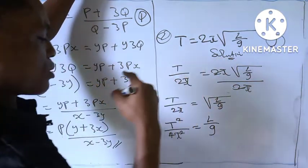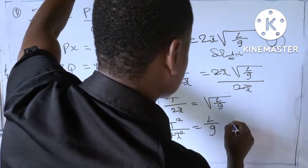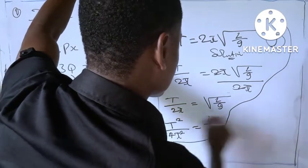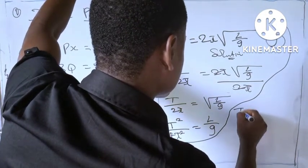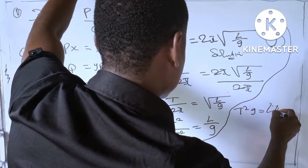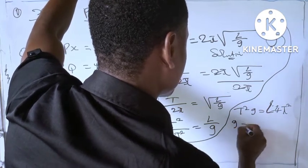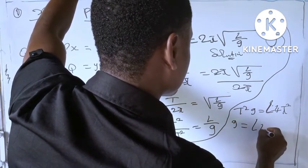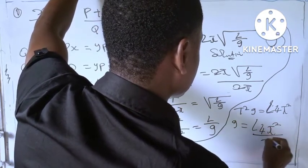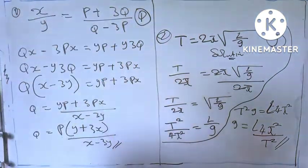We have to make g the subject of the formula. So let's do cross multiplication. So we have here t squared g equal to l times 4 pi squared. So g equal to l times 4 pi squared over t squared. So this is the answer for the second one.